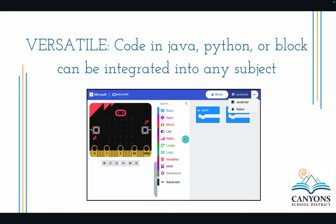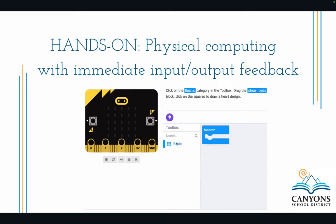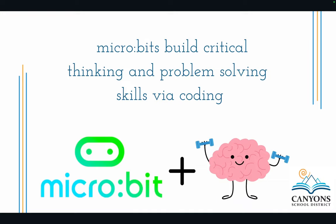While block is the easiest — drag and drop — you can also use Python or JavaScript, and those can be a great way to show students who are block coding some of the features of that code language. Micro:bits are also hands-on, providing immediate input and output feedback, and they build critical thinking and problem-solving skills via coding, helping students analyze and grow in computer science.